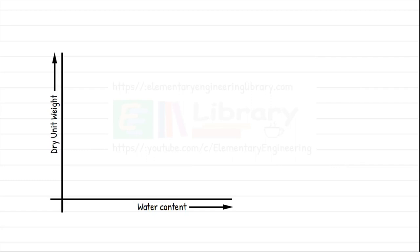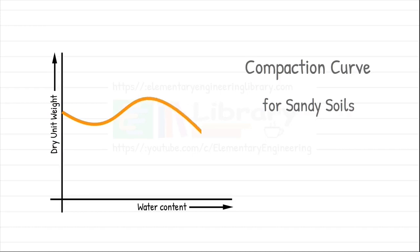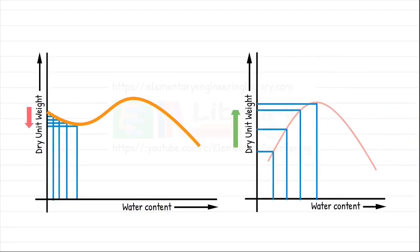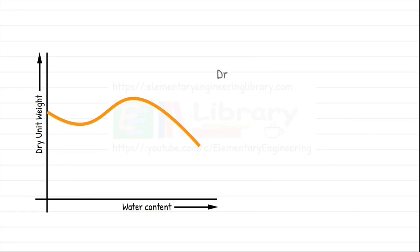But when we obtain compaction curve for pure sandy soils the trend is somewhat different. There is a large scattering of points on the compaction curve. The effect of water content on the dry density of pure sandy soils is not well defined. In sandy soils the dry density initially decreases with increase in the water content, which is opposite to what we observed in the other soils.